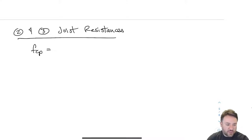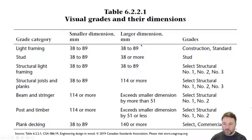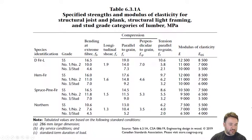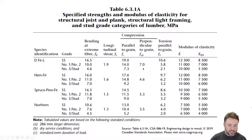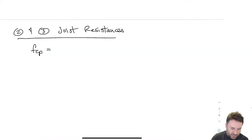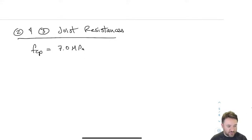The joist is 38 by 140, which is a two-by-six, fitting into the structural joist and plank category. Going to Table 6.3.1A for structural joist and plank — dealing with Douglas Fir number one — reading across gives FCP equals 7.0 MPa. This happens to be the same as the glulam value but comes from a totally different table. It's not surprising since both are made of Douglas fir.